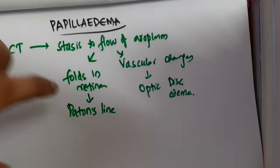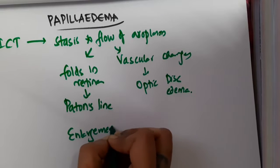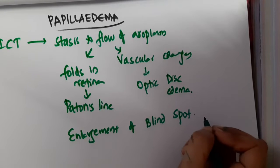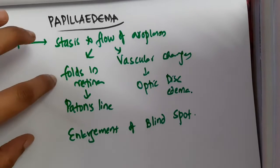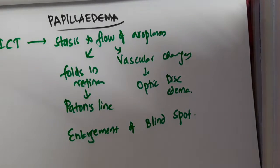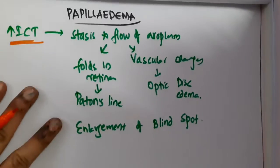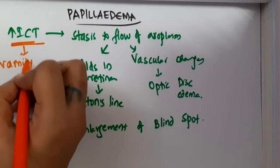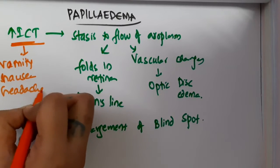So Paton's lines and optic disc edema are seen, and there is also enlargement of the blind spot in papilledema. Remember, in papilledema there are folds in the retina and visual changes. Whenever a patient has increased intracranial pressure, there will be symptoms of vomiting, nausea, and headache.